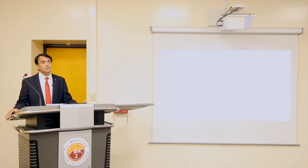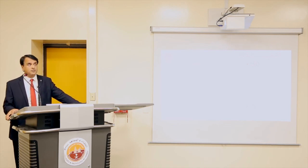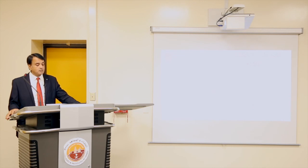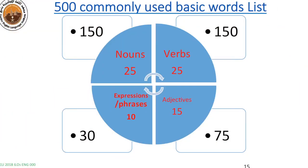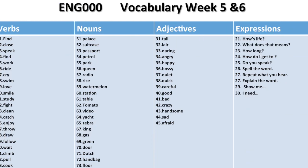One more important point: our students in Week 5 and 6 are supposed to add to their vocabulary 25 nouns, 25 verbs, 10 expressions and phrases, and 15 adjectives to complete a list of 500 commonly used basic words. Students should know how to use those 500 basic words, and every week they keep increasing by adding new words they learn. Students are expected to know how to use almost 500 commonly used words by the end of Week 6.